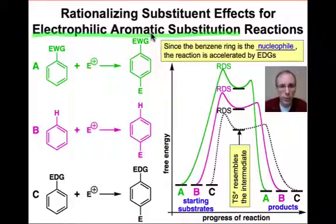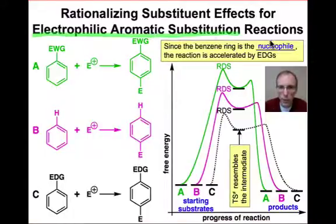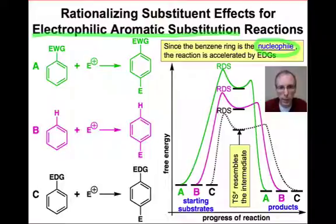Remind yourself of the mechanism of electrophilic aromatic substitution. The first step is the association of the electrophile with the pi system, so the pi system is serving as the nucleophile. Remember that there's going to be positive charge developing on the benzene ring and a positively charged intermediate along the way before the electrophile dissociation step.